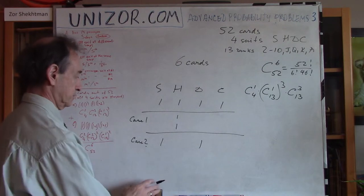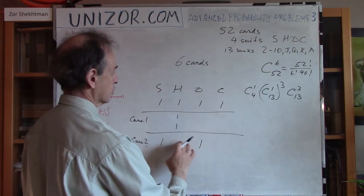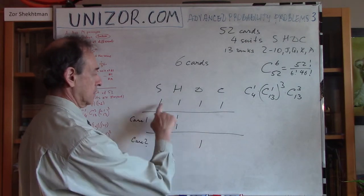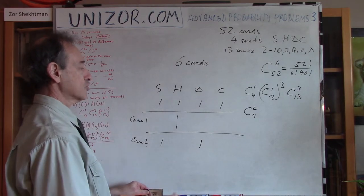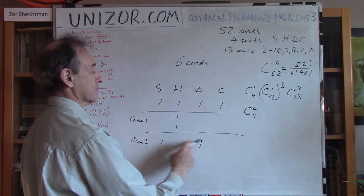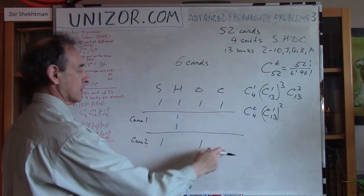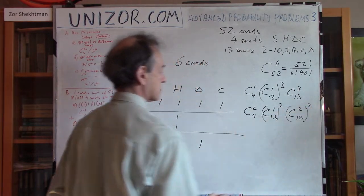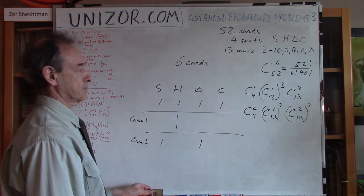Case number two: two additional cards belong to two different suits, meaning I have two suits with two cards each and two suits with one card each. First, I choose which two suits have two cards — that's C(4, 2) combinations. For the two suits with one card, I pick one card from 13 ranks each, giving 13 squared choices. For the two suits with two cards, I pick two cards from 13 ranks each, giving C(13, 2) squared combinations.